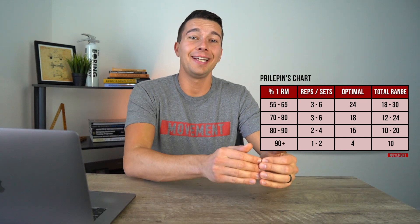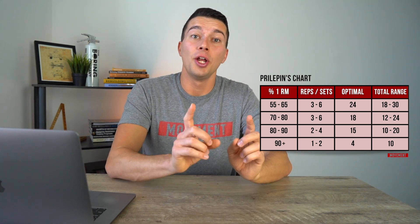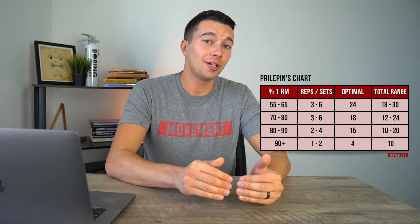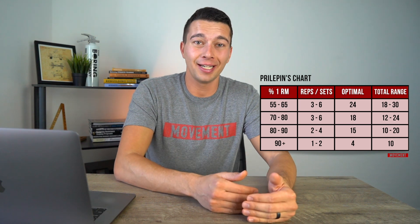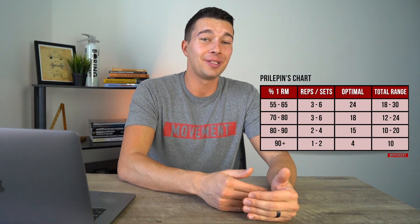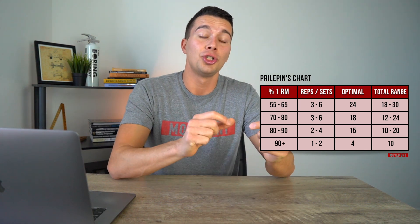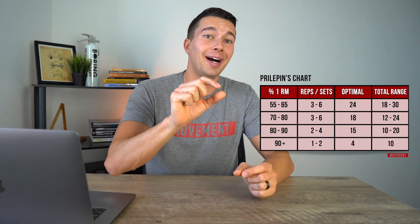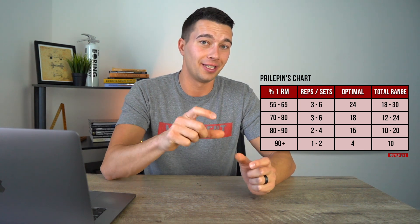You might be wondering: do I have to stay exclusively in one range? No — you could do some reps at 80 to 90% and then just a few top-end reps in that 90% plus range. You can combine training from different rep ranges.